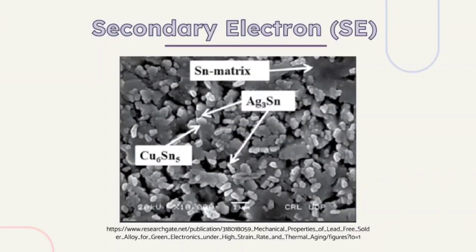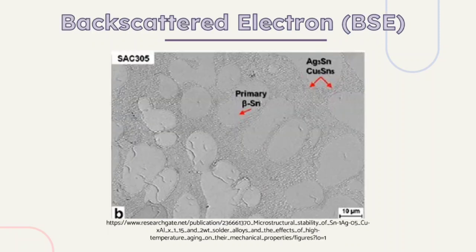From SE and BSE, different results can be obtained. The SE micrograph reveals the topography of the sample surface, where the size and shape of different phases could be observed significantly. The BSE micrograph consists of obvious contrast that separates different phases clearly. The light, smooth gray region is the primary beta-tin matrix, while the darker, rough gray region is the intermetallic compound of Ag3Sn and Cu6Sn5.